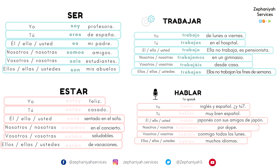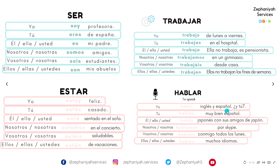Muy bien. You have this to practice — you can make sentences. Let's start with the first person singular: Soy profesora. Trabajo de lunes a viernes. Estoy feliz. Hablo inglés y español — ¿y tú? You can use this to create sentences and get familiar with the language. Put in your own information. For example: Eres de España. Trabajas en el hospital. Estás casado. Hablas muy bien español.